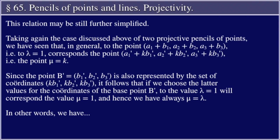This relation may be still further simplified. Taking again the case of the two projective pencils of points, we have seen that, in general, the point (a₁ + b₁, a₂ + b₂, a₃ + b₃) — i.e., λ = 1 — corresponds to the point (a₁′ + kb₁′, a₂′ + kb₂′, a₃′ + kb₃′) — i.e., μ = k. Since the point B′ = (b₁′, b₂′, b₃′) is also represented by the coordinates (kb₁′, kb₂′, kb₃′), if we choose the latter values for the coordinates of base point B′, then to λ = 1 will correspond μ = 1, and hence we have always μ = λ.